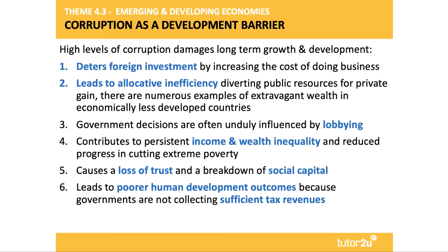Corruption leads to allocative inefficiency because scarce public resources and tax revenues are diverted away from social infrastructure and social capital — housing, healthcare, irrigation schemes, education — towards extravagant wealth and vanity projects, particularly in corrupt nations. You can find great examples of where politicians have spent billions of dollars on vanity projects.